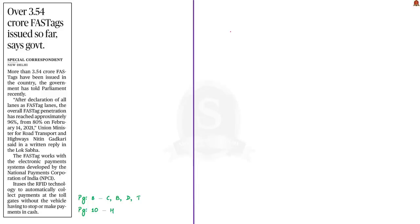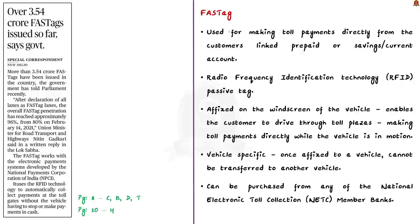Moving on to the next discussion based on this news article, it talks about FASTag. First let us understand about FASTag then we will see about the news. FASTag is used for making toll payments directly from the customer's linked prepaid account or savings or current account. It uses a radio frequency identification technology passive tag, in short RFID passive tag.